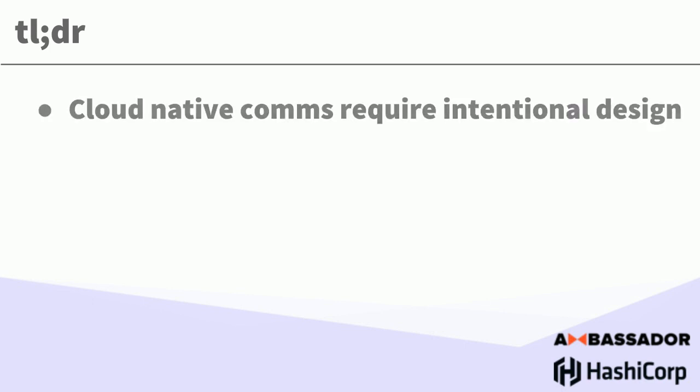So just to set the scene: cloud-native communication requires intentional design. I was a Java developer back 10, 15 years ago. When I moved into the cloud, learning about VPCs and the assembly of all the software-defined networking, I realized my old mental models couldn't be lifted and shifted into the new world. And with Kubernetes, it's different again. So definitely think about how you design your ingress and your service-to-service comms.